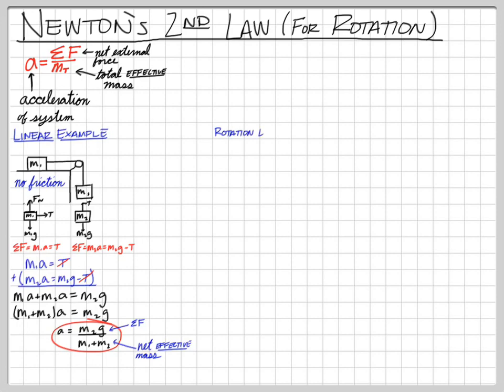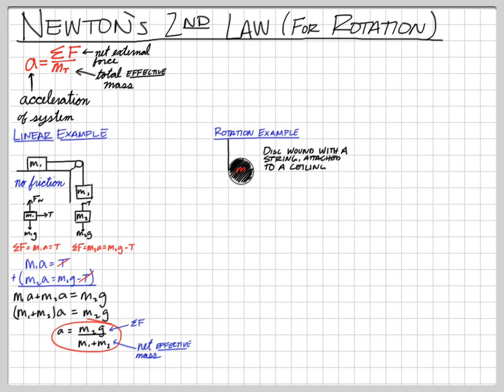Now for a rotational example — imagine we have a disc and we wrap a string around it. The disc has mass M, wound with string like a yo-yo. We attach that string to the ceiling and let go, then look at the acceleration. It's tempting to say the acceleration equals G, but that's not the case.